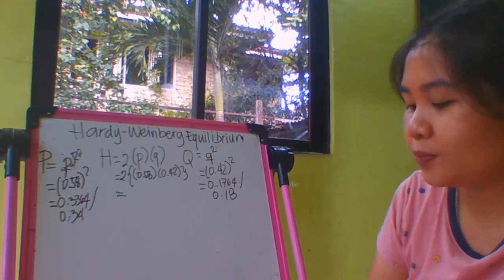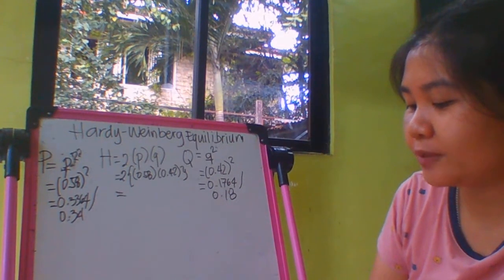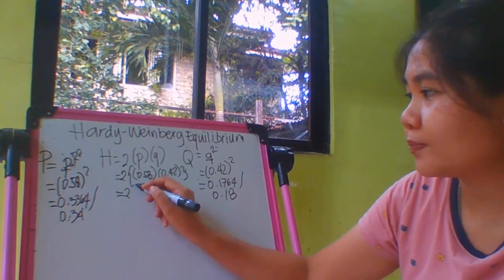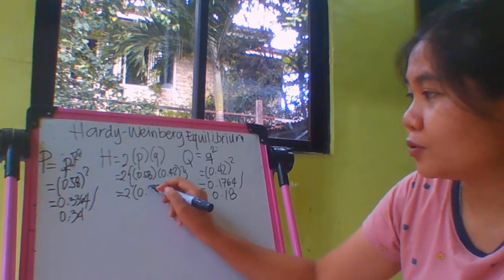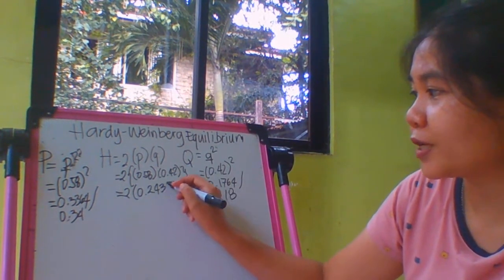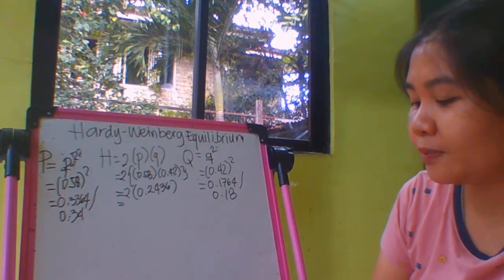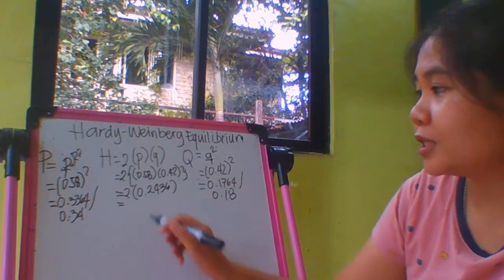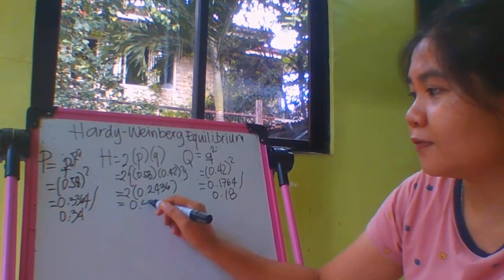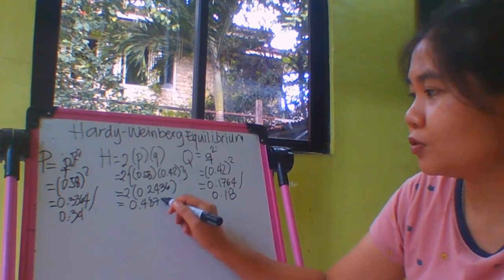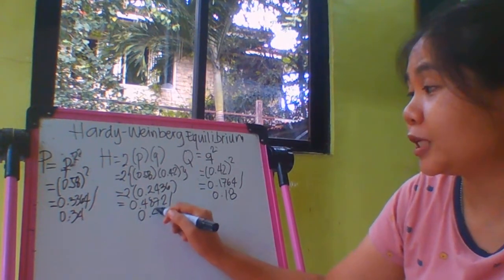So 0.58 times 0.42, that's around 0.2436, and then you multiply it by 2. Thus it is now 0.4872 or 0.49.